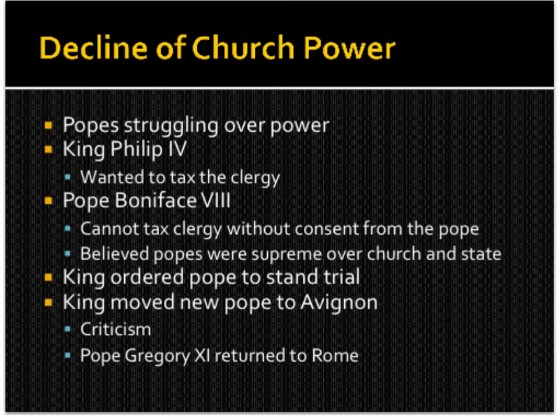At the end of the Middle Ages there is also a decline of church power. Popes were struggling over power with the monarchy — King Philip IV wanted to tax the clergy. Pope Boniface VIII believed the state could not tax the clergy without consent from the Pope, as the Pope was supreme over both church and state. The king ordered the Pope to stand trial and moved a new Pope to Avignon. There was a lot of criticism, and there were going to be seven Popes in Avignon between the years 1309 and 1377, until finally Pope Gregory XI returned the seat of the Pope back to Rome.